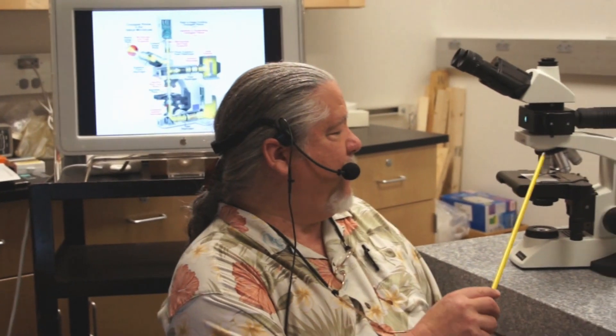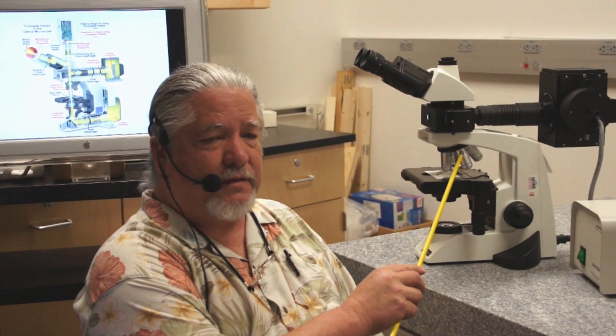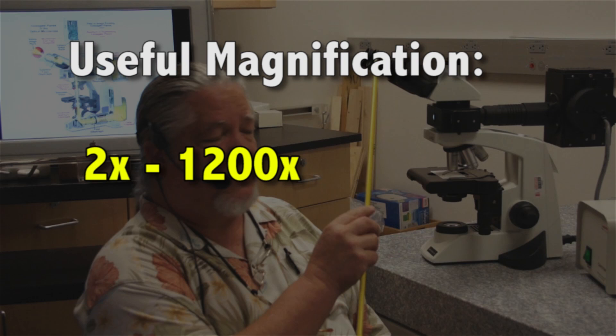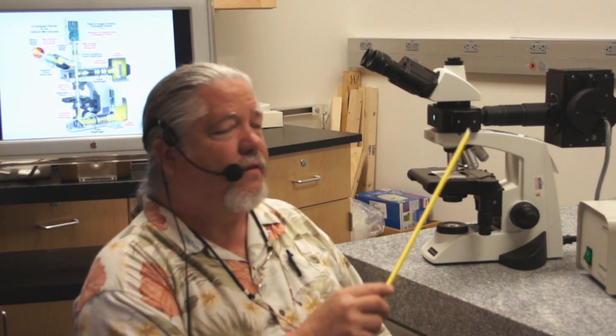This is a different instrument. This is called a compound microscope. The reason this is called a compound microscope is because to get the resultant magnification out of the instrument, you multiply the magnification of the objective lens times the magnification of the eyepiece lens. Ergo, this is a compound microscope.